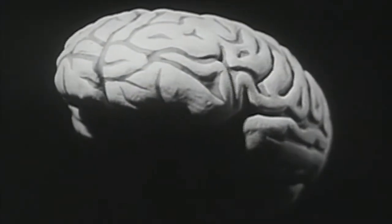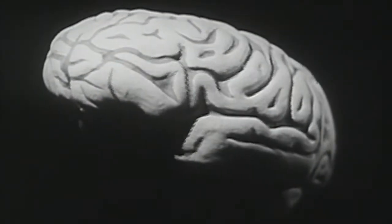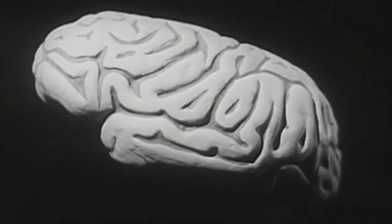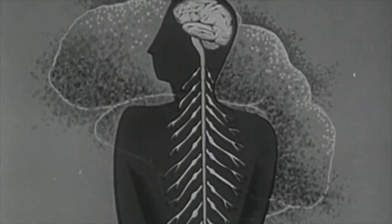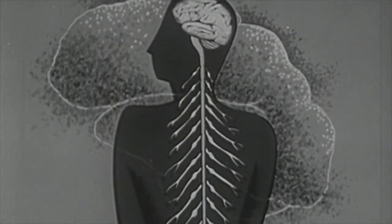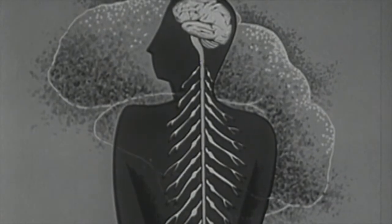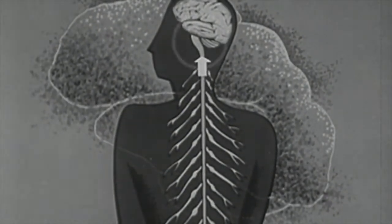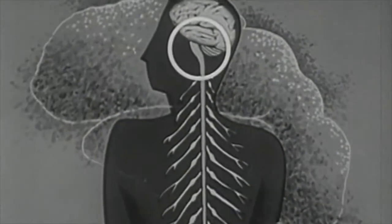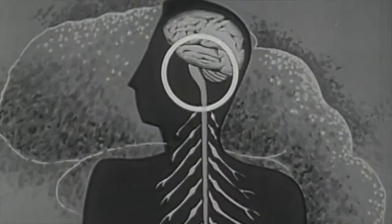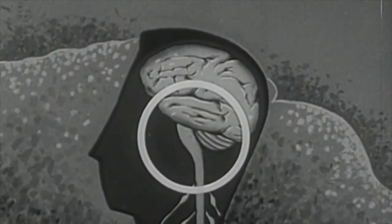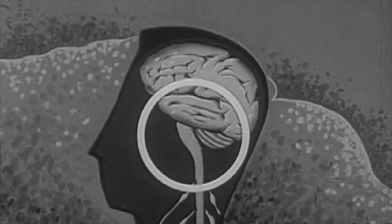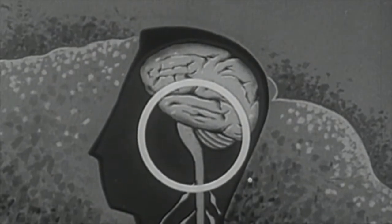The brain, a pulpy mass of cells and fibers, is the center of the network of fibers that make up man's nervous system. Extending upward into the skull, the spinal cord widens to form the brain stem. The brain stem controls actions of the body that are automatic and therefore do not have to be learned.